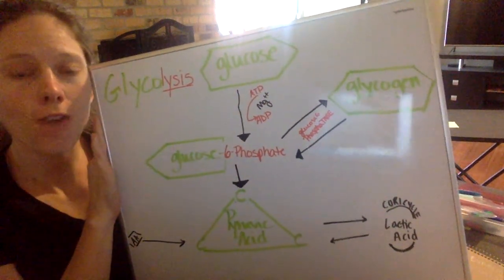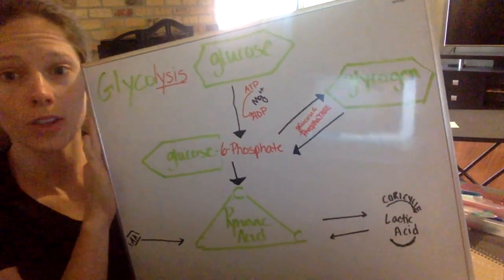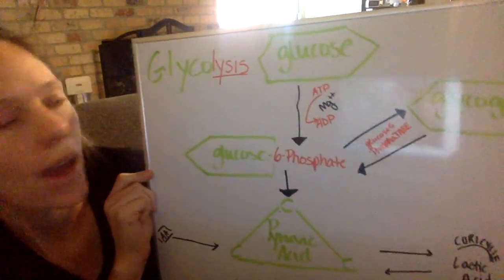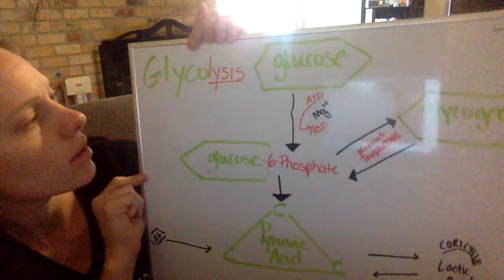Glycolysis. When we have glucose or glycogen, it can be broken down. This process is called glycolysis.